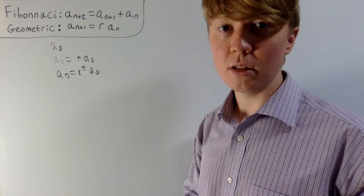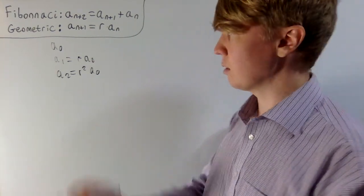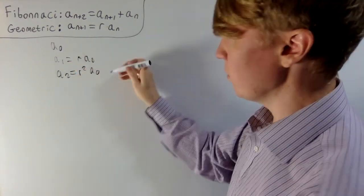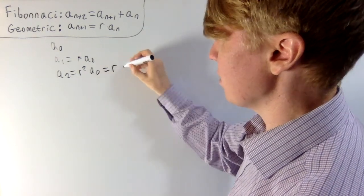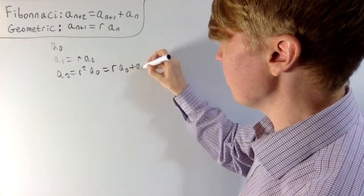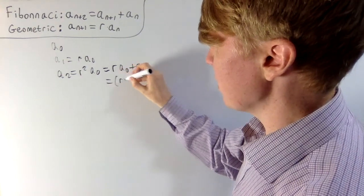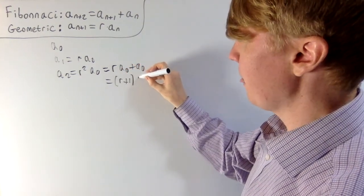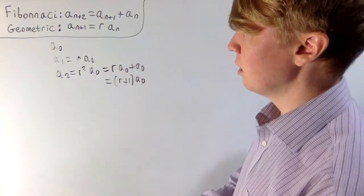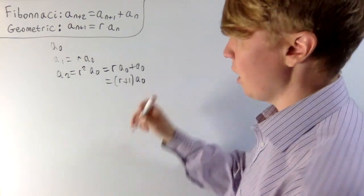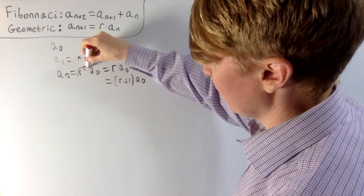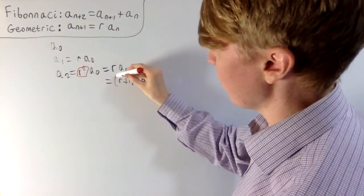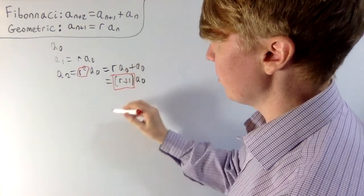But at this point in the sequence, the Fibonacci rules start to kick in, so this also has to be equal to the sum of the previous two terms. This has to equal r a0 plus a0, or if you factorise this, r plus 1 multiplied by a0. So already we're seeing some restrictions on r. We see that r has to satisfy, because a0 isn't 0, r squared equals r plus 1.